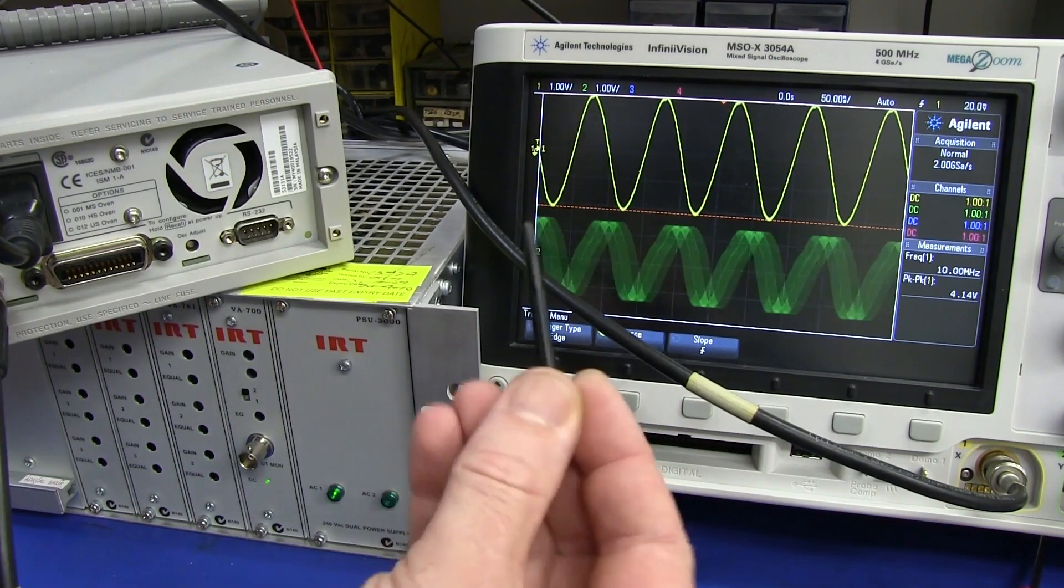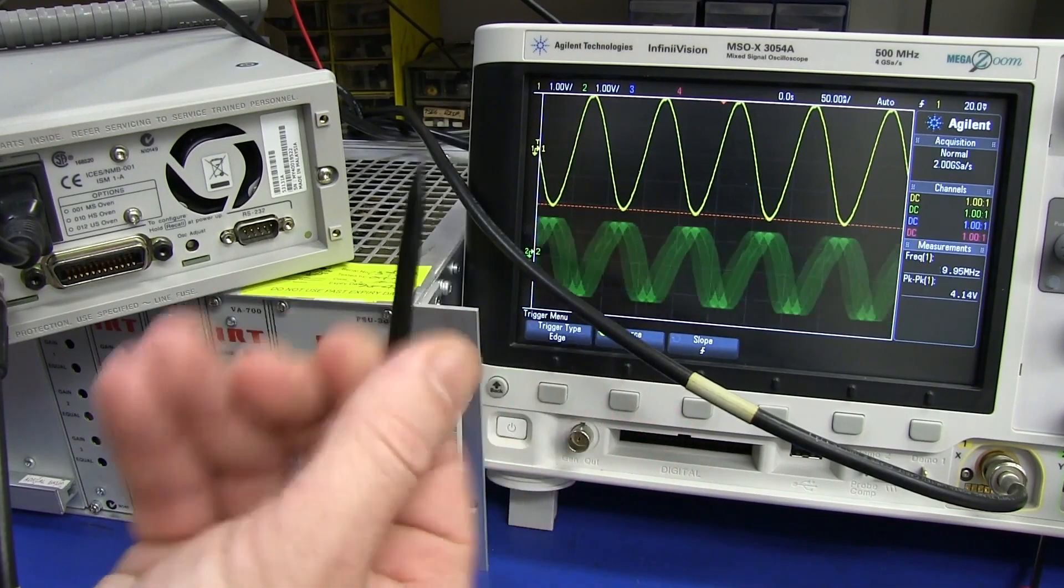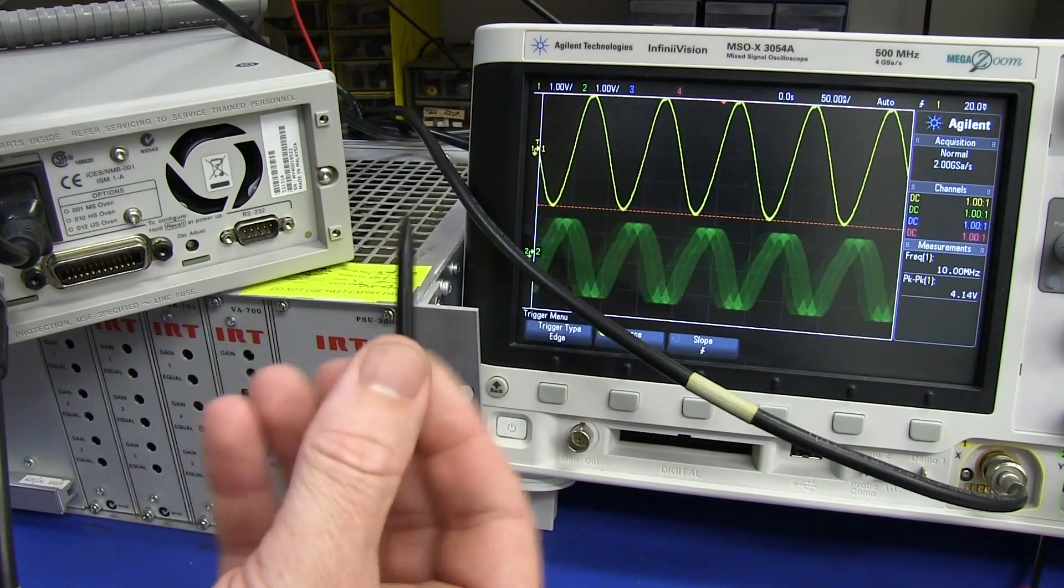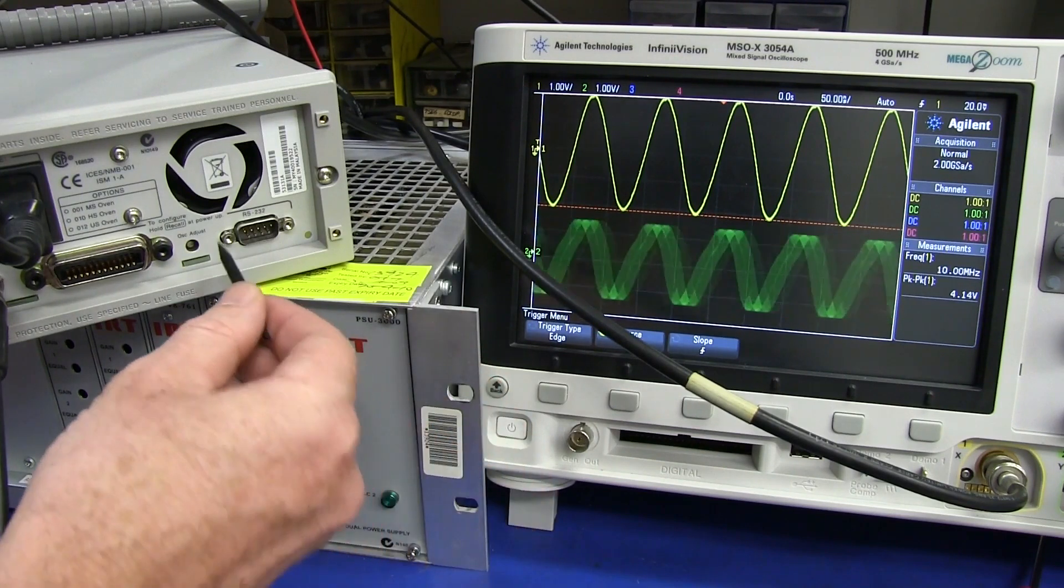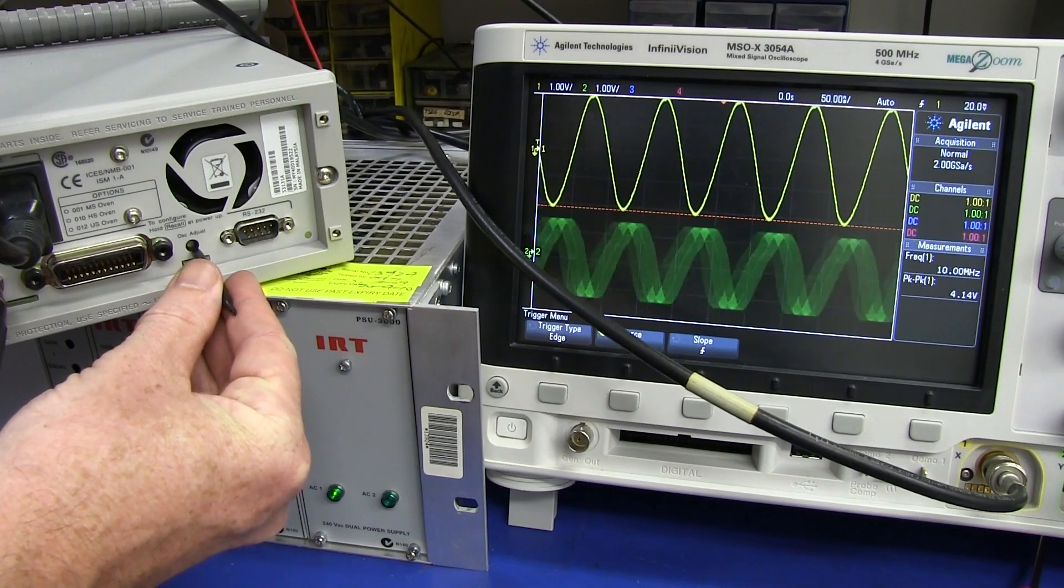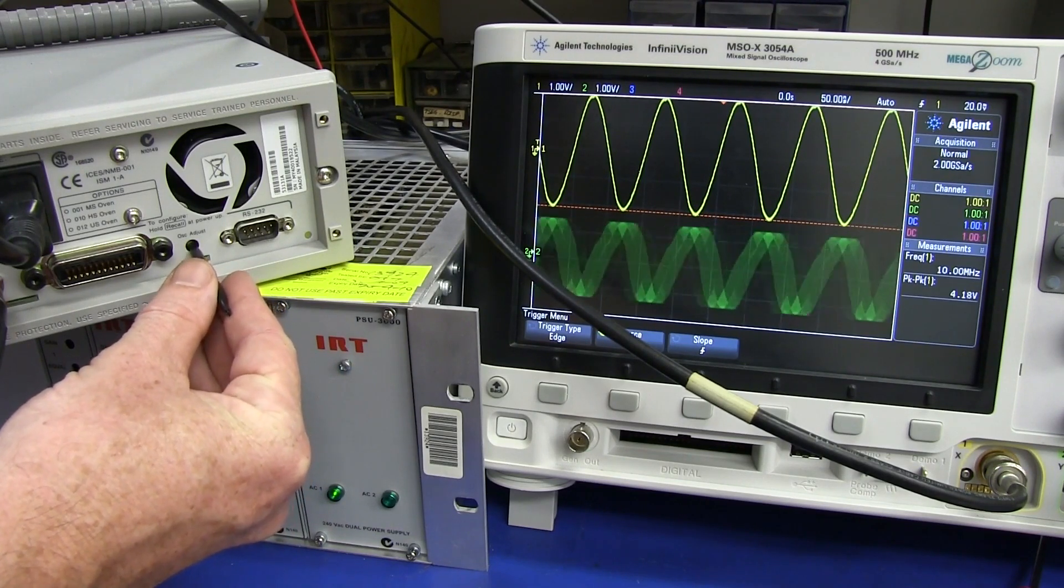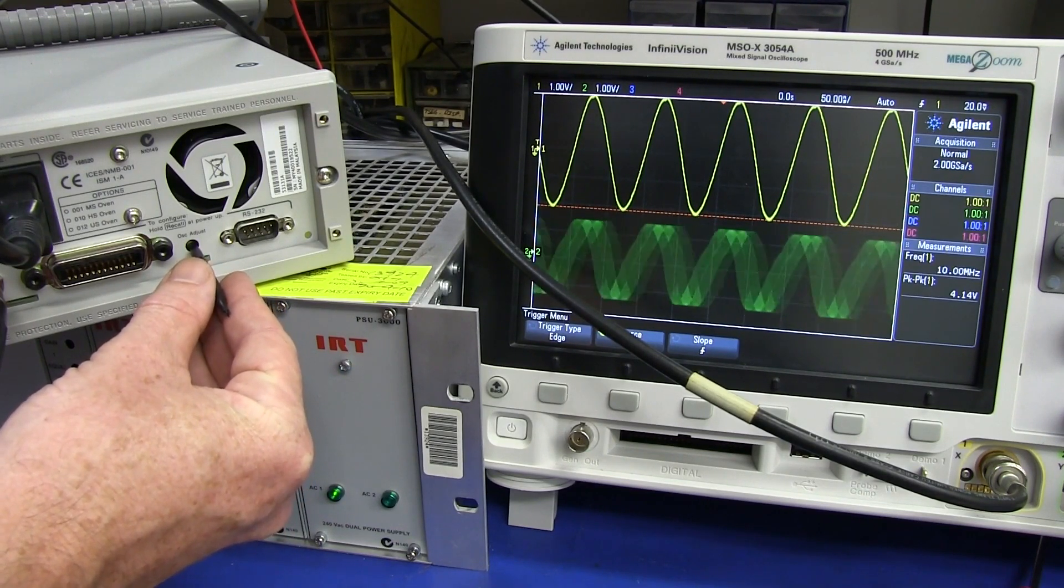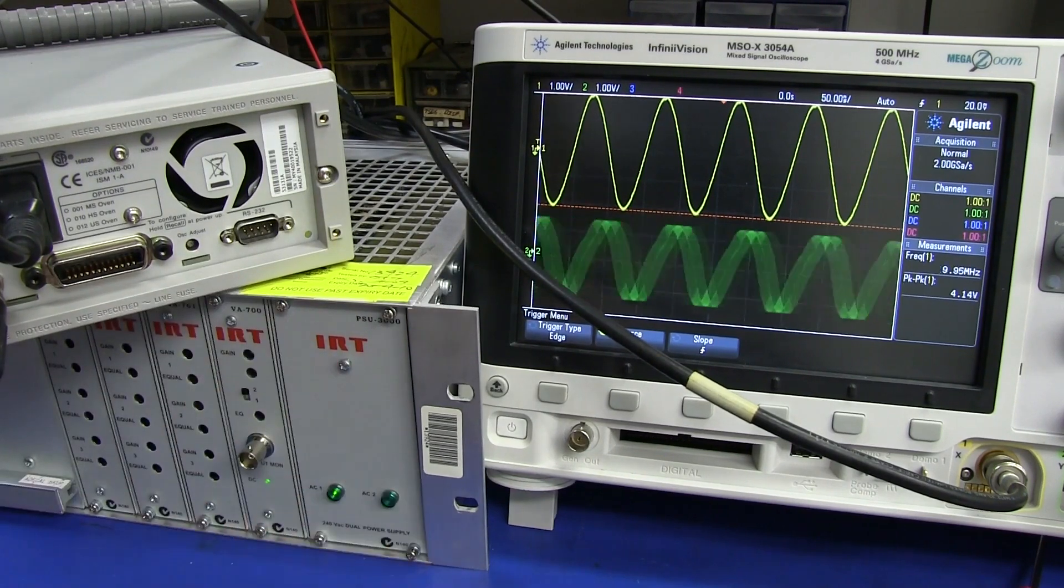But, if I do the same thing with this non-conductive, non-metallic, little adjustment pot, I can go near it, and it will change a little bit. Will change a little bit. And if I touch it, it's not nearly as bad as the other ones. So there you go.